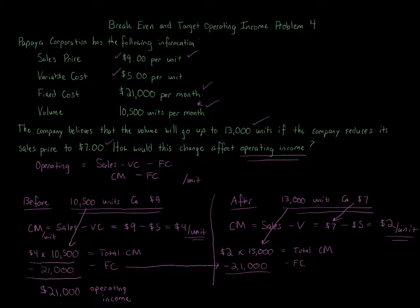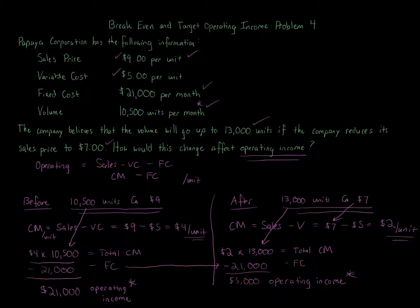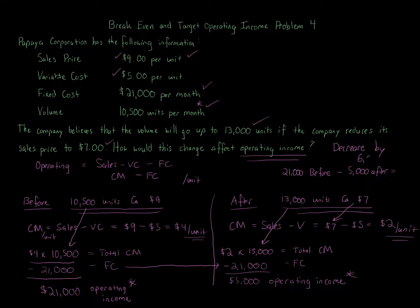Subtracting $21,000 fixed costs from the after total contribution margin gives us an operating income of $5,000. Comparing before and after: operating income was $21,000 before and is $5,000 after. You can think of operating income as production profit — there are still selling and general administrative expenses beyond this.